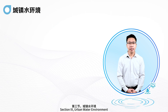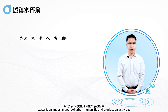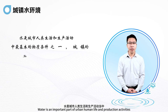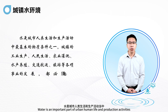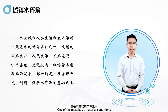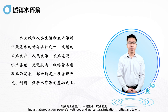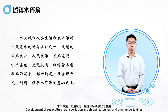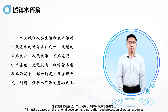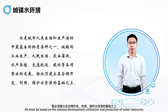Section 3: Urban Water Environment. Water is one of the most basic material conditions for urban human life and production activities. Industrial production, people's livelihood, agricultural irrigation in cities and towns, aquaculture, transportation, shipping, tourism and other undertakings all must be based on the rational development, utilization and protection of water resources.